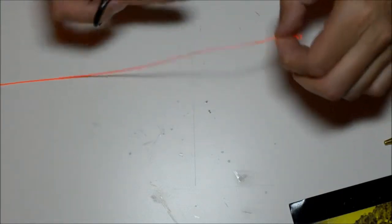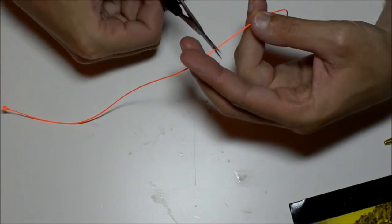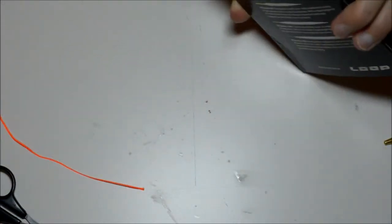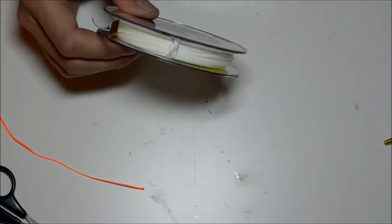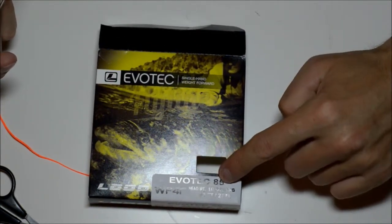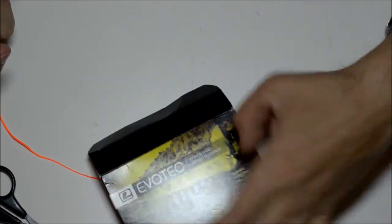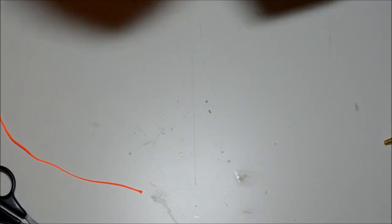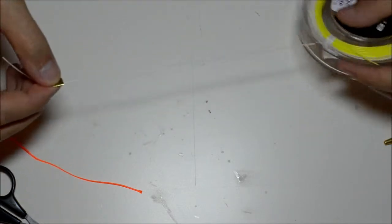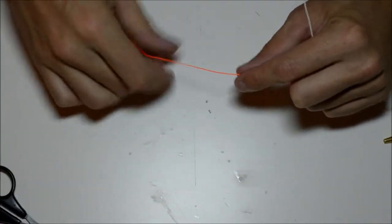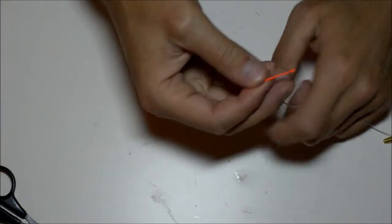Now the best thing about the 30 pound teeny backing is that you can take the backing, by the way this is the new loop evotech line, this is the shorthead 85 which stands for 8.5 meters. I'm gonna test it tomorrow for some nice big fat trout. Okay, back to the good thing about the teeny backing is that you can take the backing and stick it over your fly line.